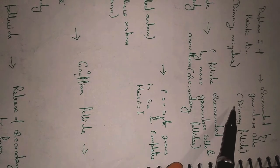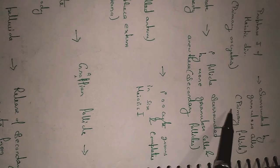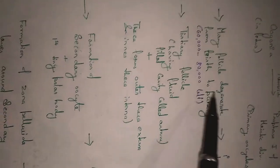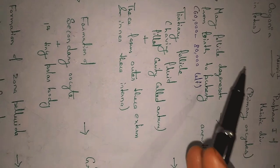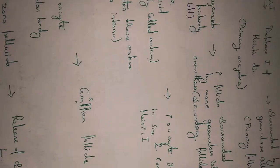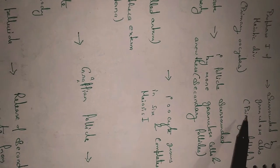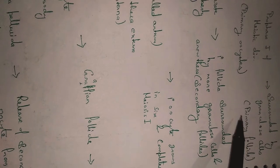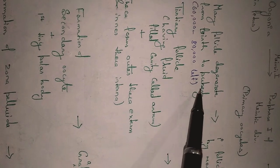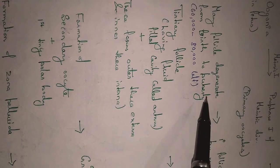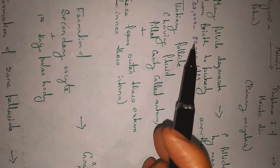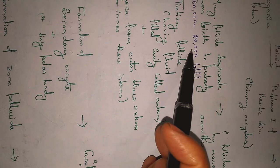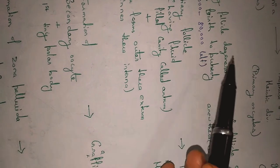This is the primary follicle. Many follicles degenerate from birth to puberty and are destroyed. How many follicles are left between birth and puberty? Approximately 60,000 to 80,000 primary follicles are left inside the ovary after this degeneration.